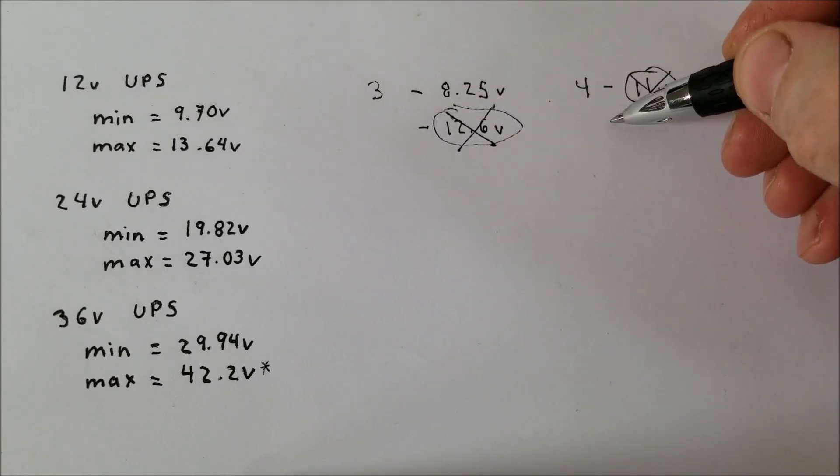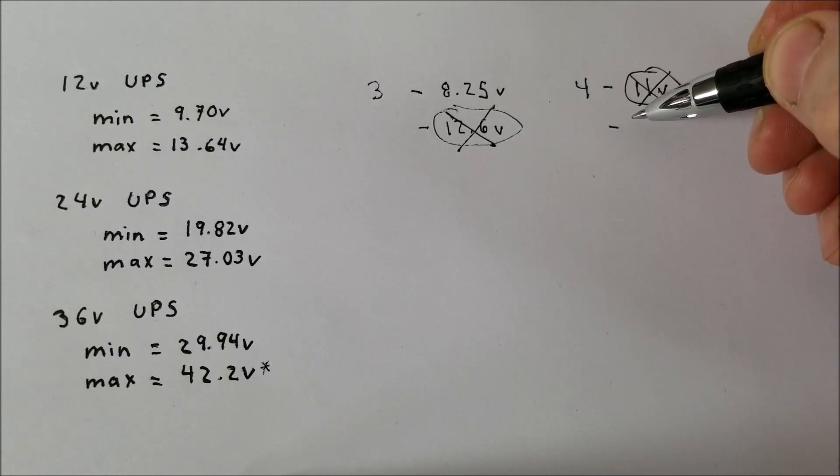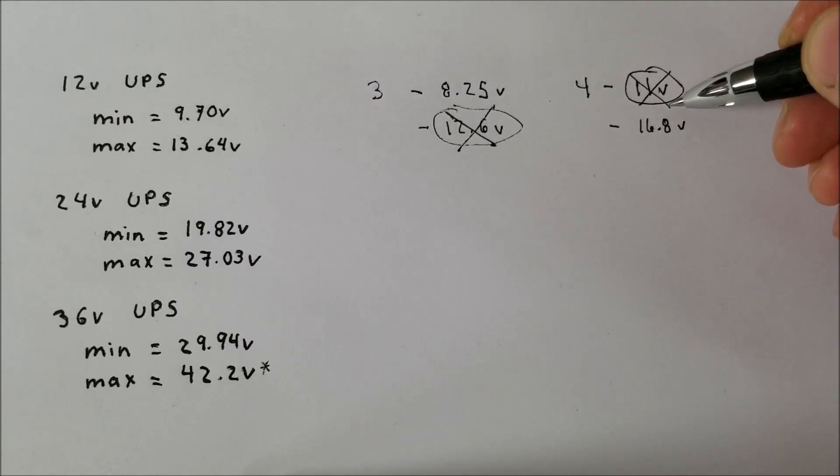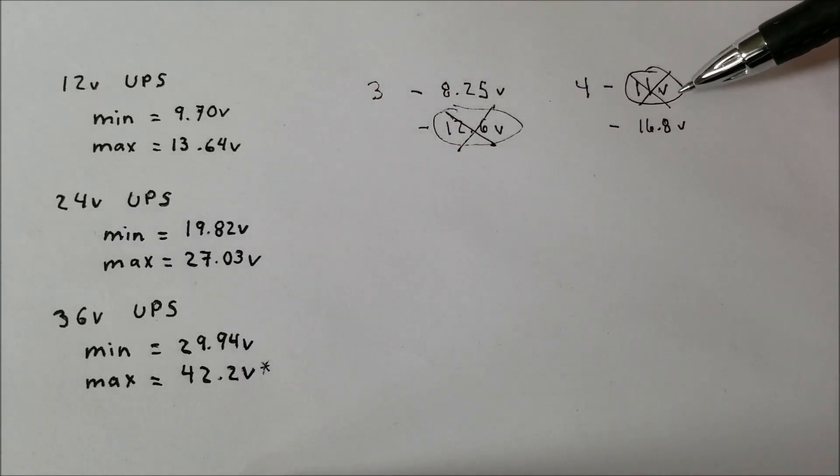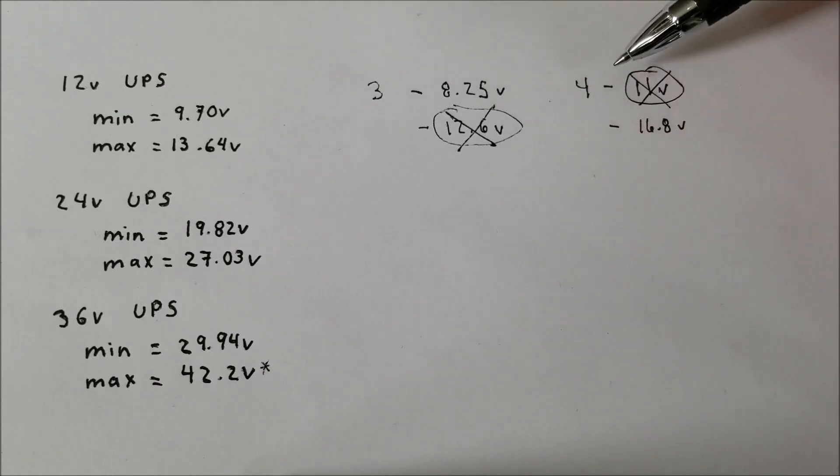We can continue the calculations anyways just to see the max. So if we multiply 4.2 times 4, we get 16.8V. So this would be okay because this is now above the maximum charge voltage. However, because of the lower voltage either at 3 or at 4 cells in series, it just does not work with the UPS.